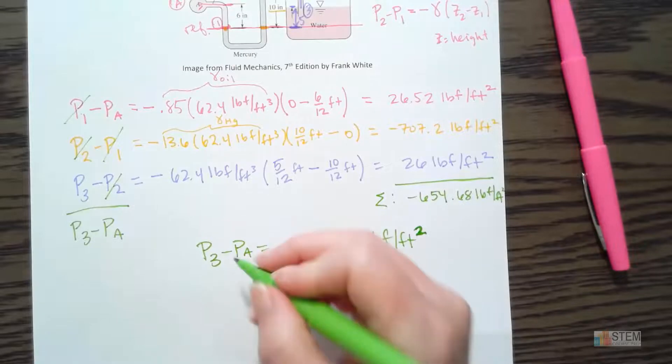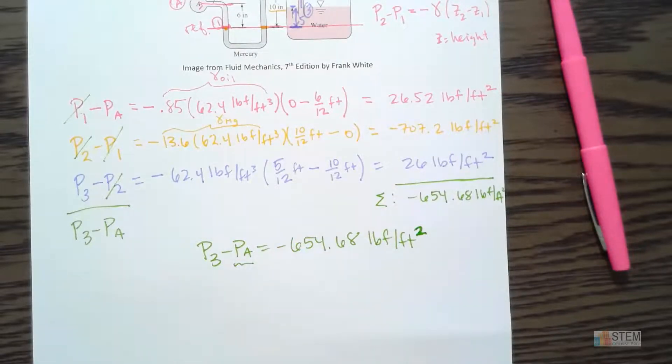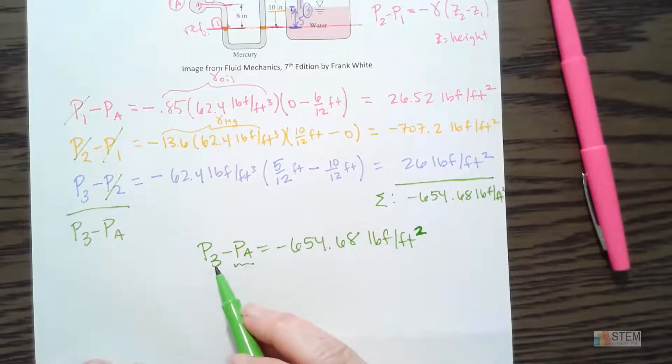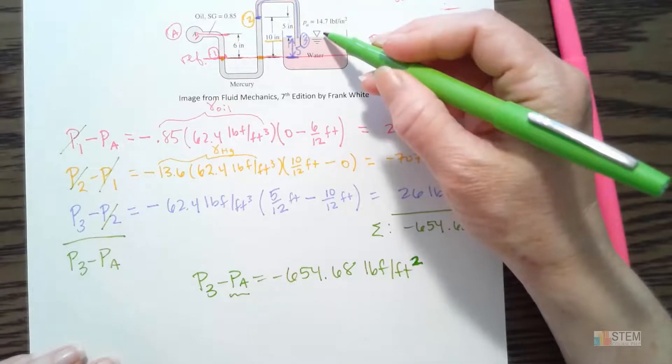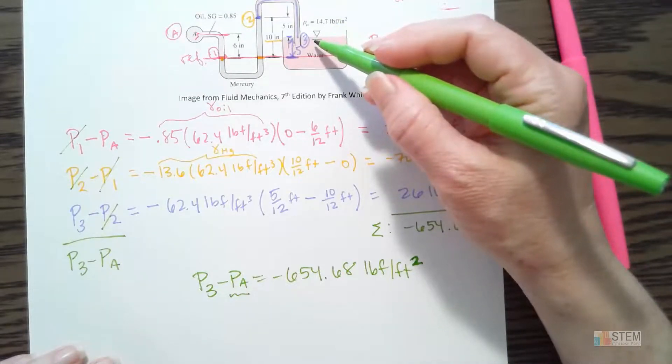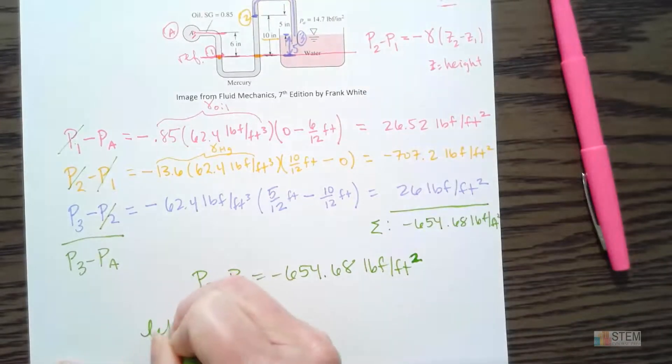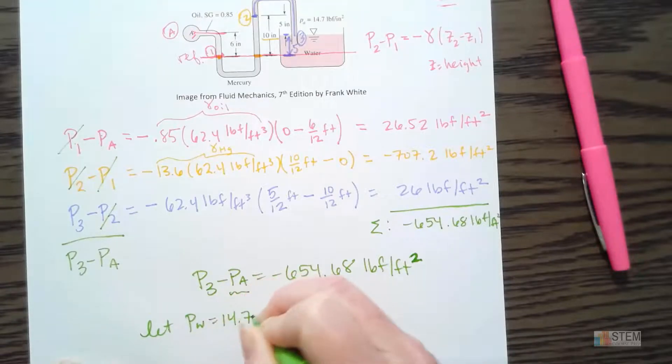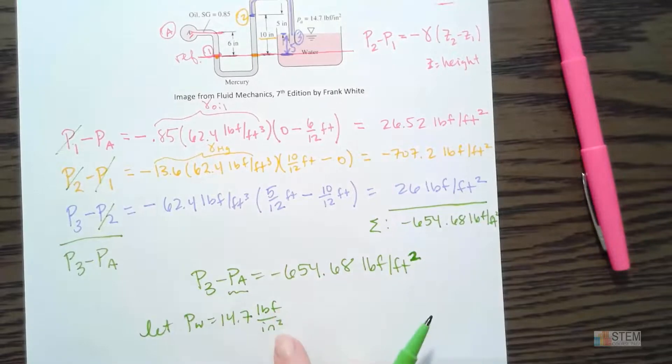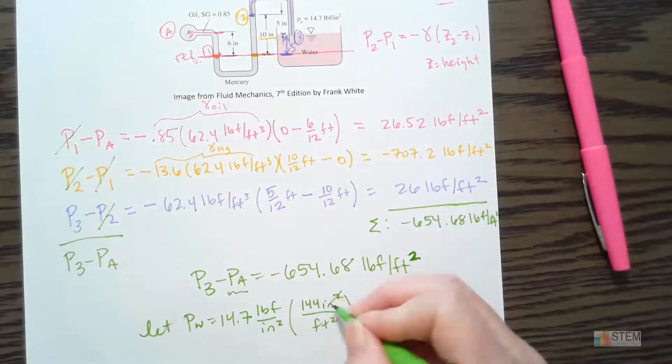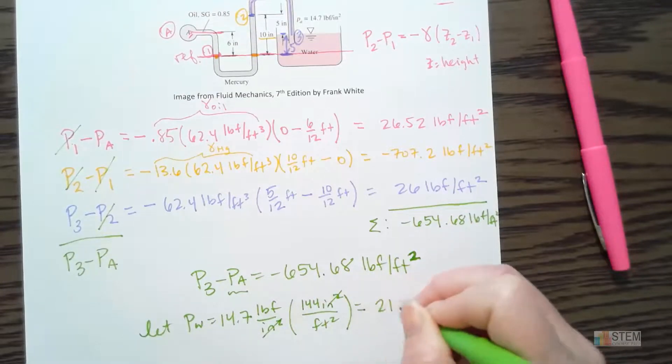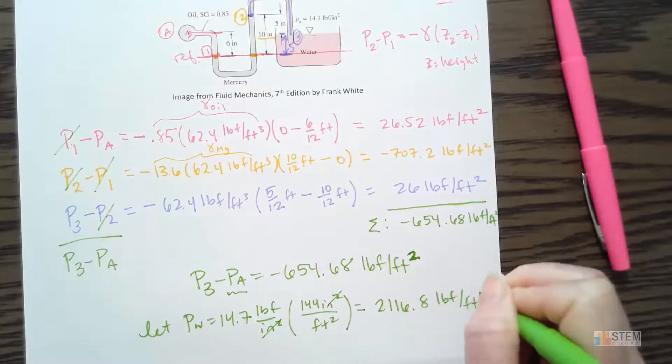Okay. So put it together and then P3 minus PA has to be negative 654.68 pounds per square foot. Okay. Alright. So now what do we do? We wanted to know what PA is, right? I want the pressure at point A in absolute terms. So that means I need to find PA. Well, I can do that by figuring out what P3 is. What do we think P3 is going to be? Well, what do we have here? We've got this atmospheric pressure, right? Pushing down here at point three. So we're going to set P3 equal to that 14.7. Alright. Now notice the units here, though. This is PSI. This is feet squared, right? So I need to do a conversion here. So that means we're going to do 144 inches squared per foot squared. Alright. And then that gets us the units we want. So this will be 2,116.8. And now I've got pounds per square foot.